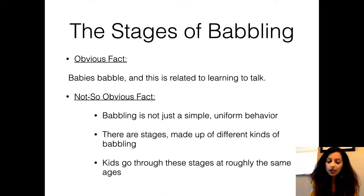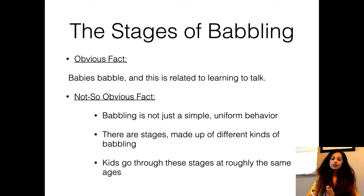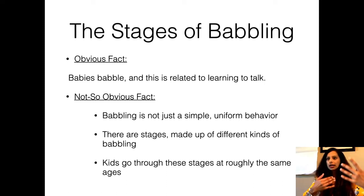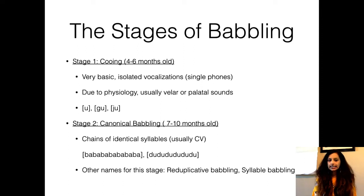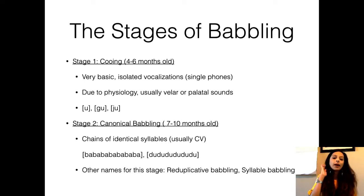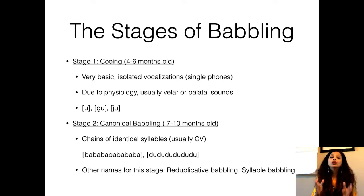When babies start to talk, we call this babbling, and it starts as early as three months of age. Children go through different stages and each child hits these stages at roughly the same time. The first stage is called cooing, which starts around four to six months. These are very basic single phones — things like 'ugu,' 'gu,' 'ju' — bilabial or palatal sounds. Stage two is the canonical babbling stage, around seven to ten months. These are chains of identical patterns — the baby makes sounds like 'ba-ba-ba' or 'doo-doo-doo.' This is also called reduplicated or syllable babbling.